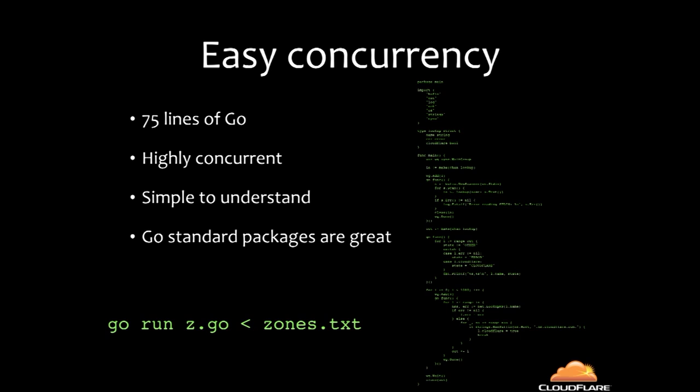Each goroutine just calls LookupNS, figures out what to do with it, checks if it's a Cloudflare nameserver, and sets the appropriate flags. The whole program is 75 lines — highly concurrent, standard packages are great. The one-liner is just 'go run' the program and pipe in the list of zones. It ran in about an hour and a half, processing all two million sites.